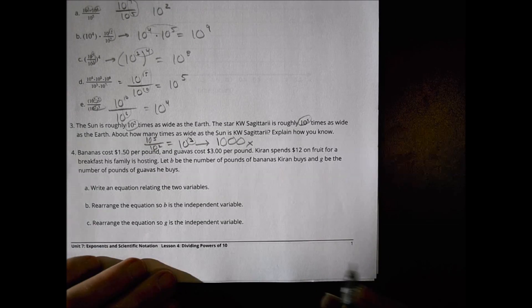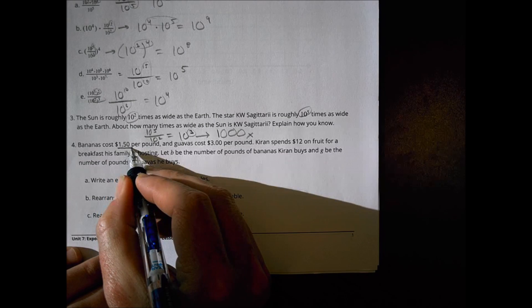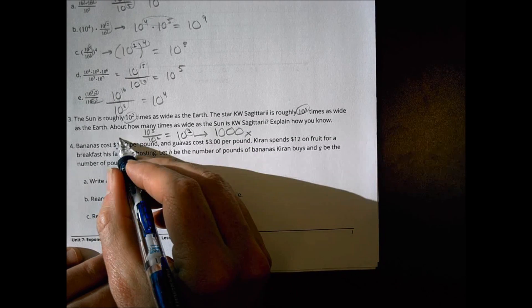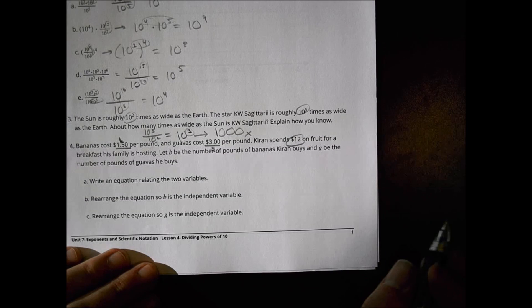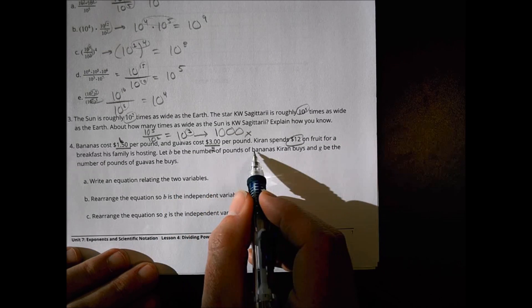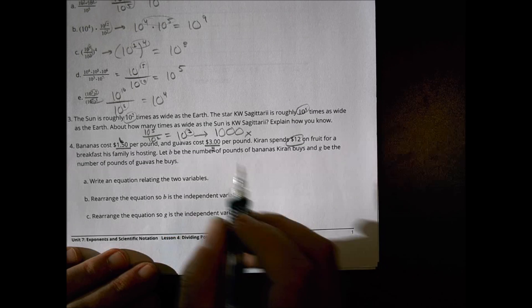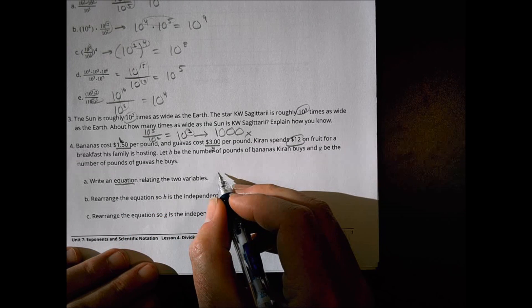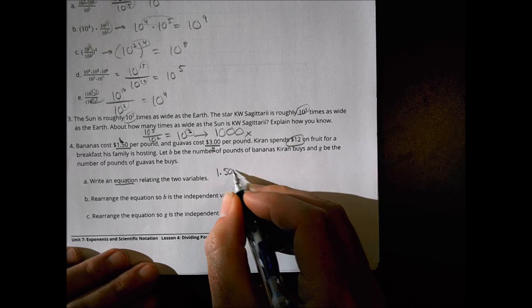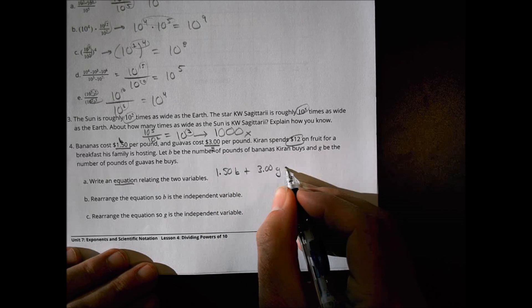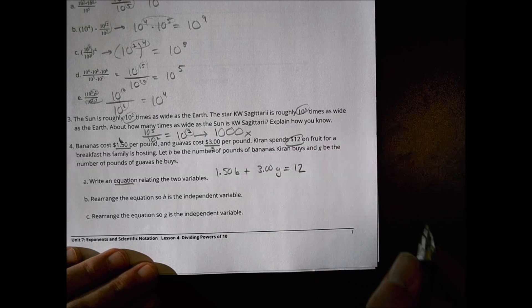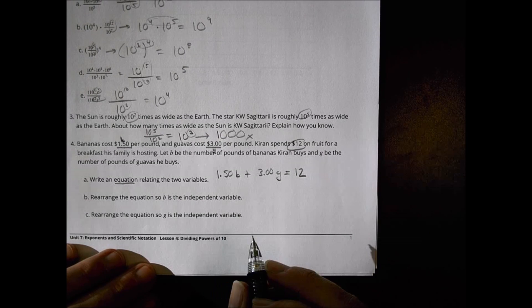Number four. Bananas cost a dollar fifty a pound for bananas. Guavas cost three dollar a pound for guavas. And they spend twelve dollars on fruit. Let B be pounds of bananas. G for guavas. Write an equation. The two variables. No problem. So a dollar fifty for bananas. Plus three dollars for guavas. And I have a total of twelve dollars is what I'm going to use. That becomes my equation.